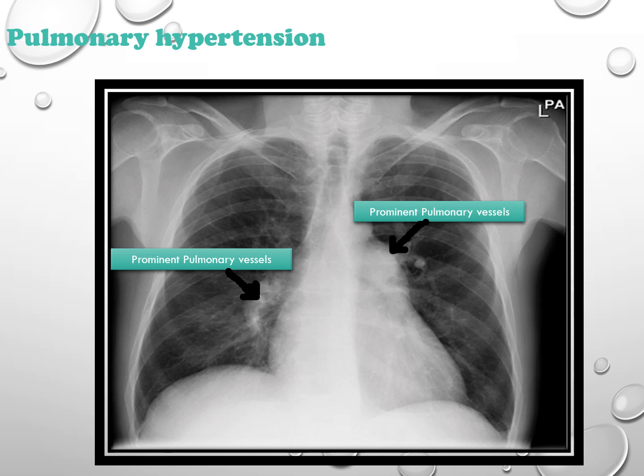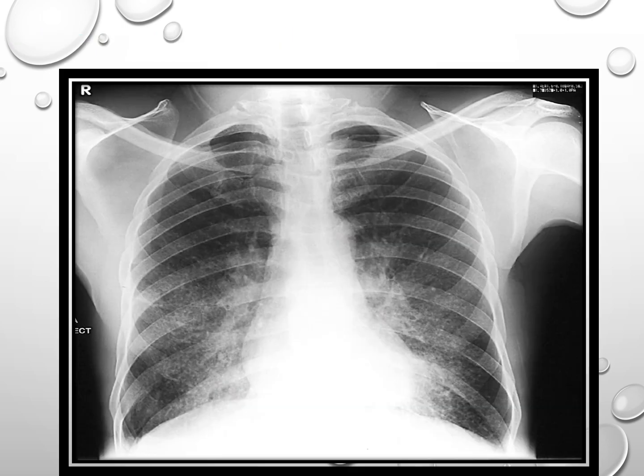This x-ray reveals signs of pulmonary hypertension, notably characterized by the enlargement of central pulmonary arteries. Additionally, it shows cardiac changes attributed to right ventricular enlargement. This x-ray shows bilateral interstitial pneumonitis, a condition frequently associated with mycoplasma pneumonia.